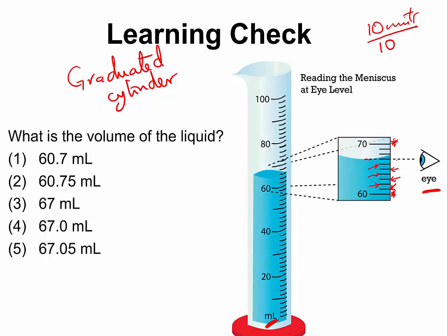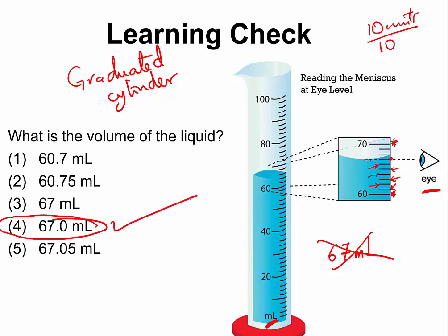And this would be 67. So how do we record this? We know the liquid level appears to be exactly on 67 milliliter, but if you write 67 milliliter you would be wrong, because your last digit must be a guess — we always read between the lines. So if you write 67.0 milliliter you would be correct. If you write 67.1 milliliter, you would be correct. So would 66.9 milliliter. But all other options would be incorrect.